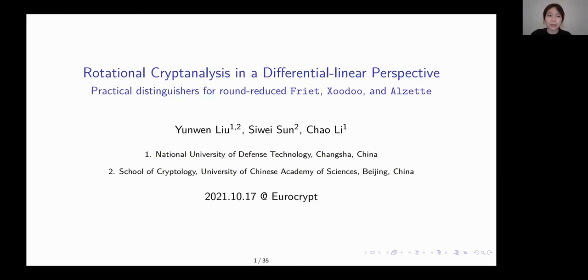This is the presentation of our paper Rotational Cryptanalysis in a Differential Linear Perspective: Practical Distinguishers for Round-Reduced Speck, Xoodoo, and Alzette. I am Yunwen, and this is a joint work with Si Weisun and Chao Li.